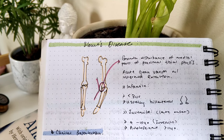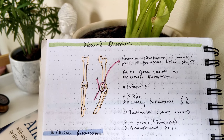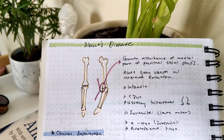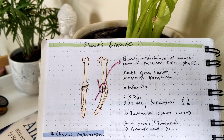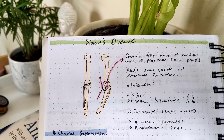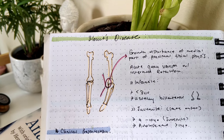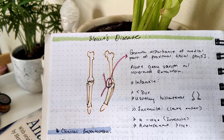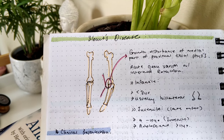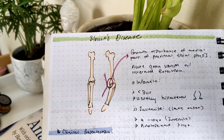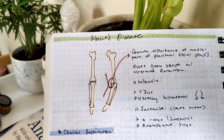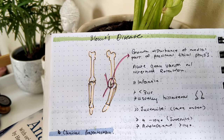Blount's disease refers to the growth disturbance of the medial parts of the proximal tibial physis. There is an acute genu varum with internal rotation — genu referring to the knee, and varum referring to outbowing.